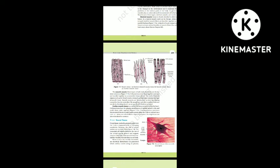The smooth muscle fibers taper at both ends (fusiform) and do not show striations. Cell junctions hold them together and they are bundled together in a connective tissue sheath. The wall of internal organs such as blood vessels, stomach and intestine contains this type of muscle tissue. Smooth muscles are involuntary — their functioning cannot be directly controlled; we are usually not able to make them contract merely by thinking about it, as we can do with skeletal muscles.